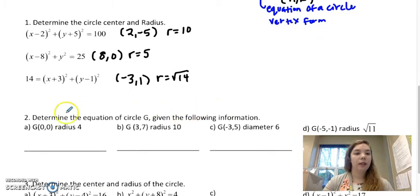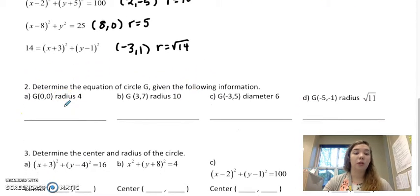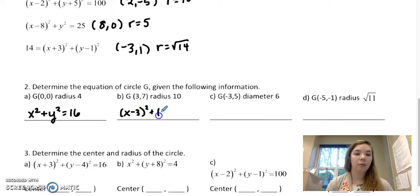So here's number 2, we're just doing the opposite, so we're writing the equation. I'd have x minus 0, which is just x squared, plus y minus 0, or just y squared, and then 4 squared is 16. For this one I'd have x minus 3 squared plus y minus 7 squared equals 100, which is 10 squared.